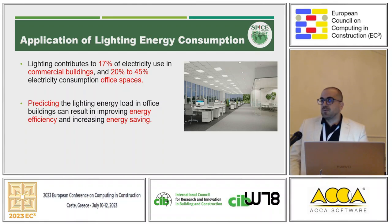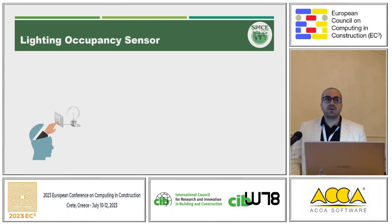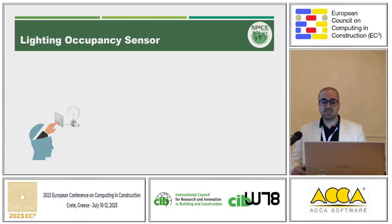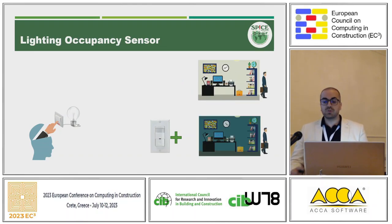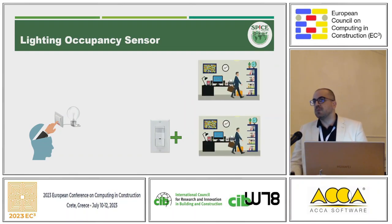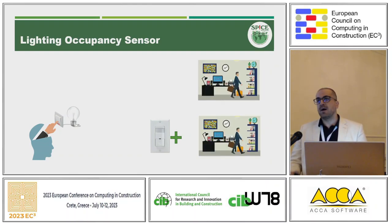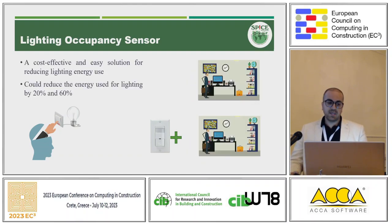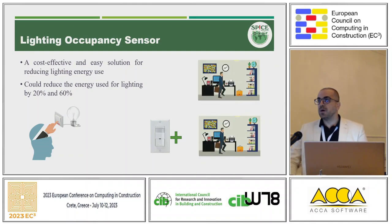In this paper, we focus on lighting energy consumption, which in office buildings can be a huge portion of electricity consumption — usually around 20 to 30 percent. When talking about occupant behavior in terms of lighting, one good example of technology use is occupancy sensors. Without a sensor, when an occupant leaves a room, they might forget to turn off the lights. With an occupancy sensor, the lights turn off automatically, and these sensors are proven to reduce lighting load by 60 percent.